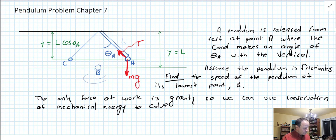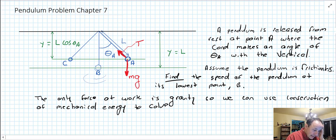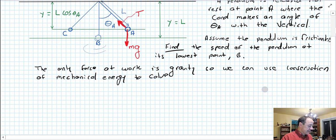The only force at work in this is gravity, so we're able to use conservation of mechanical energy for the solution. I drew in here the tension force that's along the cord and the weight force that's always vertically downward towards the earth. Those are the directions of the forces at point A. They're of course going to be different at B and C, but we're just going to deal with A for the moment.